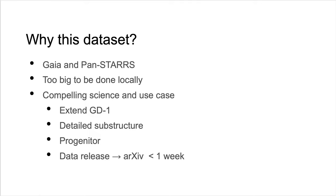We chose this dataset for a number of reasons. It includes two large datasets, neither of which is feasible to download and search in its entirety. The science itself is compelling — with this analysis, the authors were able to extend the known length of GD1, identify detailed substructure within the stream which could point to dark matter substructure, and identify the progenitor cluster. The identification of the stream is easy to visualize and does not require an advanced astronomical background. Finally, the paper was published one week after data release, demonstrating that this type of analysis can be developed ahead of time and then applied to a new dataset for rapid results.